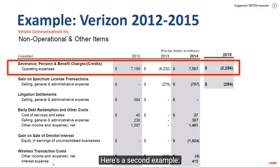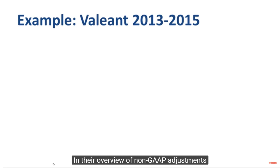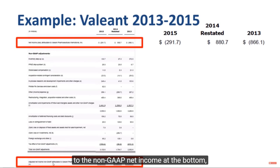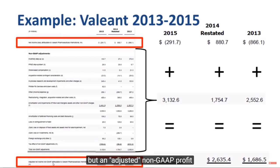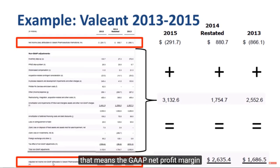Here's a second example: pharmaceutical company Valeant. In their non-GAAP adjustments, to get from GAAP net income to non-GAAP net income, Valeant has a long list of up to 15 items, and every year the non-GAAP results are higher than the GAAP results. In 2015, the company had a GAAP loss of $292 million but an adjusted non-GAAP profit of $2.8 billion, after stripping out amortization of intangible assets, acquisition costs, and other expenses. On revenue of $10.4 billion, the GAAP net profit margin of minus 3% turned into a non-GAAP profit margin of plus 27% — quite a difference.